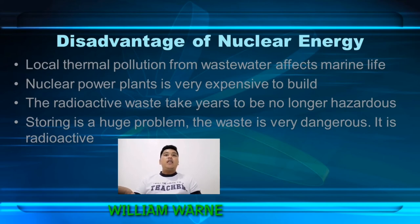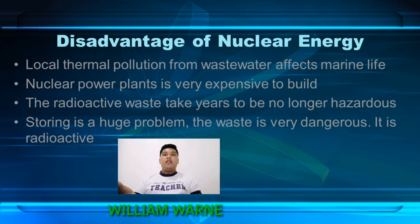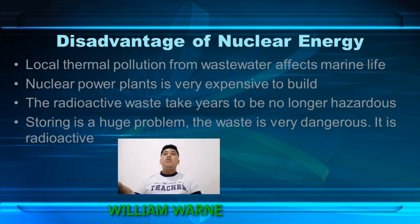The third disadvantage is nuclear accidents. The accident at Three Mile Island in 1979, and the Chernobyl accident that occurred on April 26, 1986 at the Chernobyl nuclear power plant in Ukraine, was the worst nuclear accident in history.